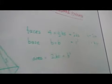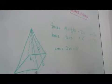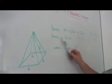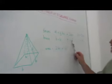The base is a simple square. And the length of the side of the square is B, so the base is B times B, which is B squared.